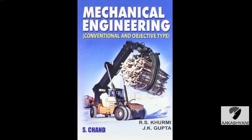Question number 99: A carbon steel having Brinell hardness number 100 should have ultimate tensile strength closer to 350 N/mm². Question number 100: A steel alloy containing 36% nickel is called Invar.